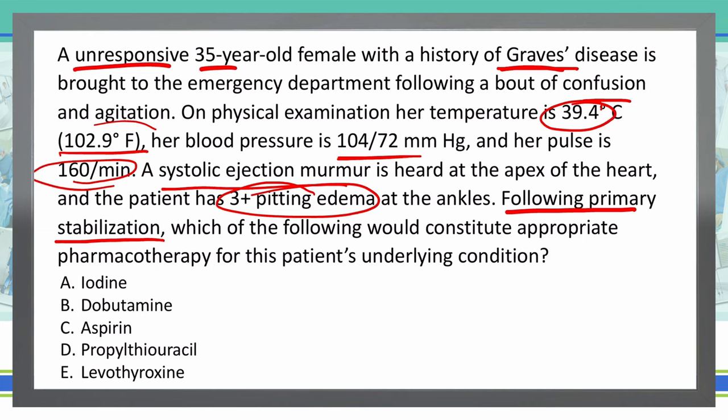What I need to know now is what to do to address the underlying situation — the thyroid storm going on with this patient. Let's look at the answer choices. A: Iodine. Iodine can actually exacerbate this situation by stimulating the endogenous synthesis of thyroxine.